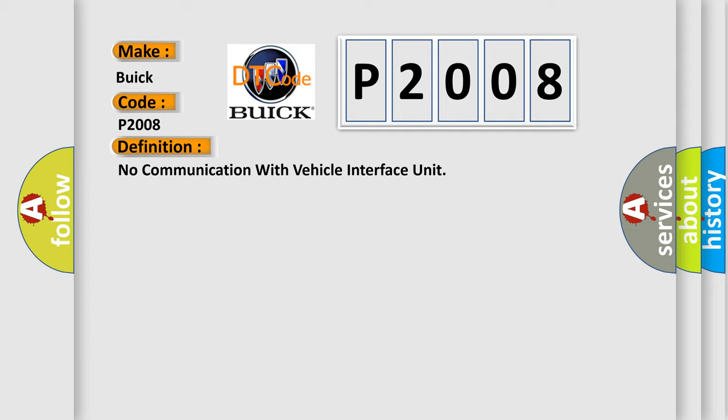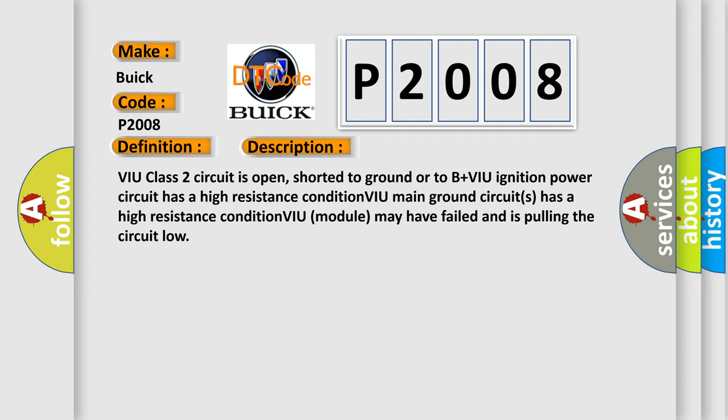And now this is a short description of this DTC code. VIU class 2 circuit is open, shorted to ground or to B plus VIU ignition power circuit has a high resistance condition. VIU main ground circuits has a high resistance condition. VIU module may have failed and is pulling the circuit low.